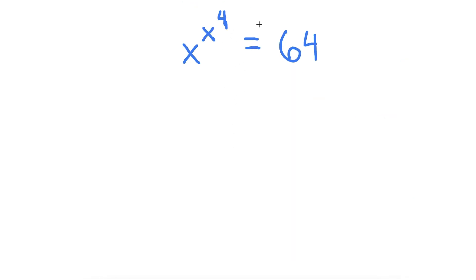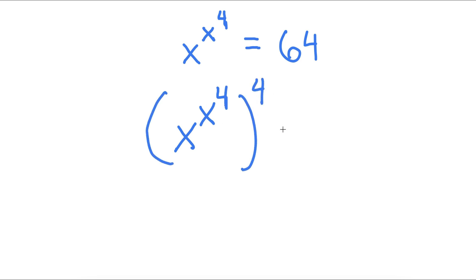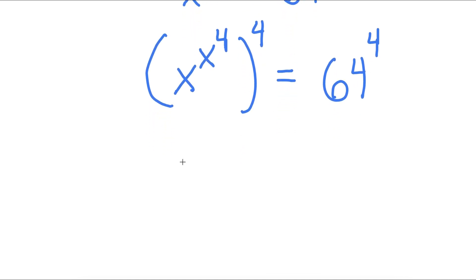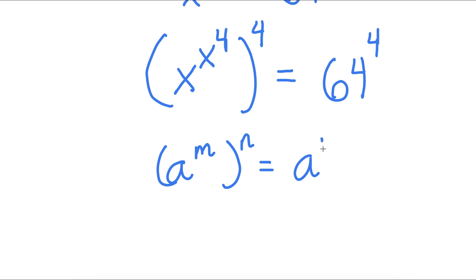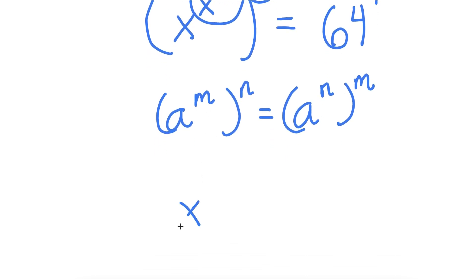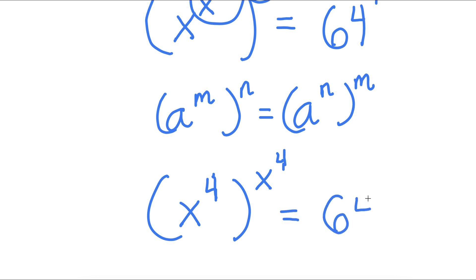In this problem, I have x to the power of x to the power of 4 is equal to 64. To solve this, I'm going to start by taking the power of 4 on both sides. So now I have x to the power of x to the power of 4, to the power of 4, equals 64 to the power of 4. If I have something in the form a to the power of m to the power of n, this is the same as a to the power of n to the power of m. So I can think of x to the power of 4 as m and 4 as n, and switching those gives x to the power of 4 to the power of 4 equals 64 to the power of 4.